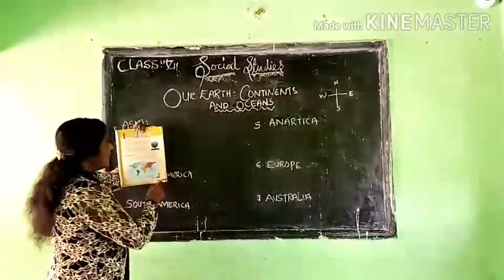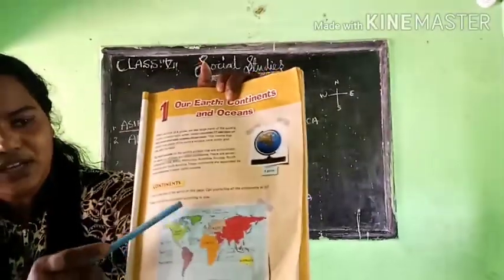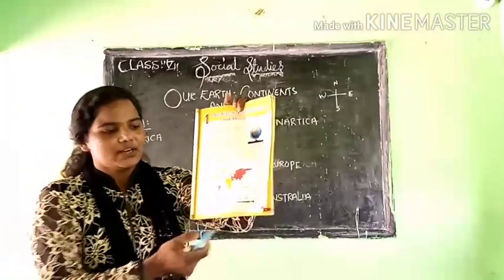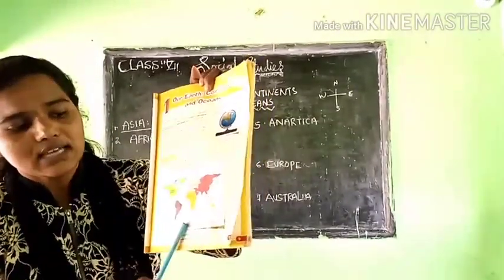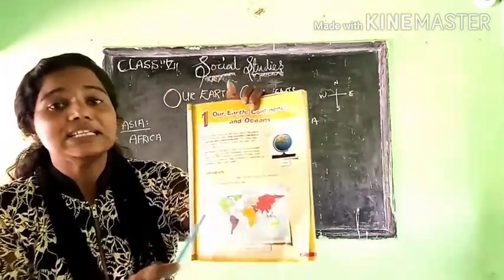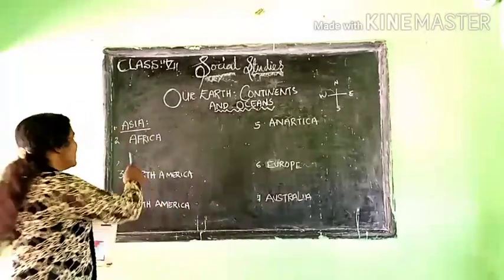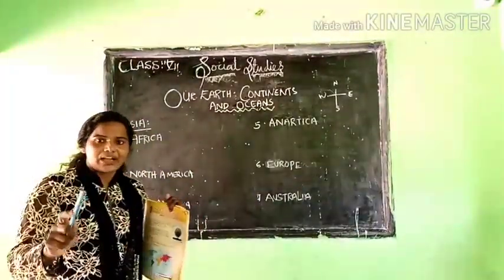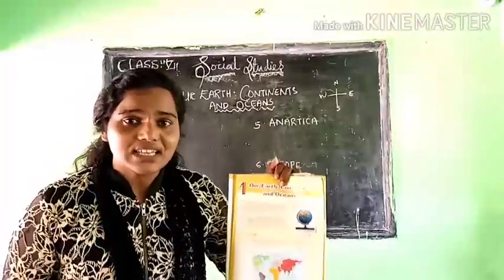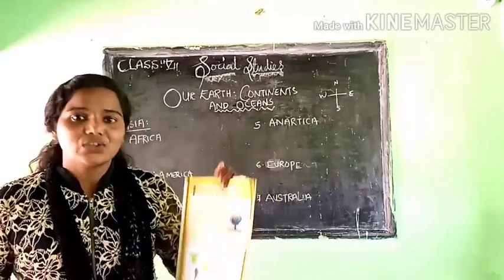What surrounds the African continent? The North side has the Mediterranean Sea. The South side has the Southern Ocean. The East side has the Indian Ocean. And the West side has the Atlantic Ocean. So the African continent is surrounded by water on all four sides.